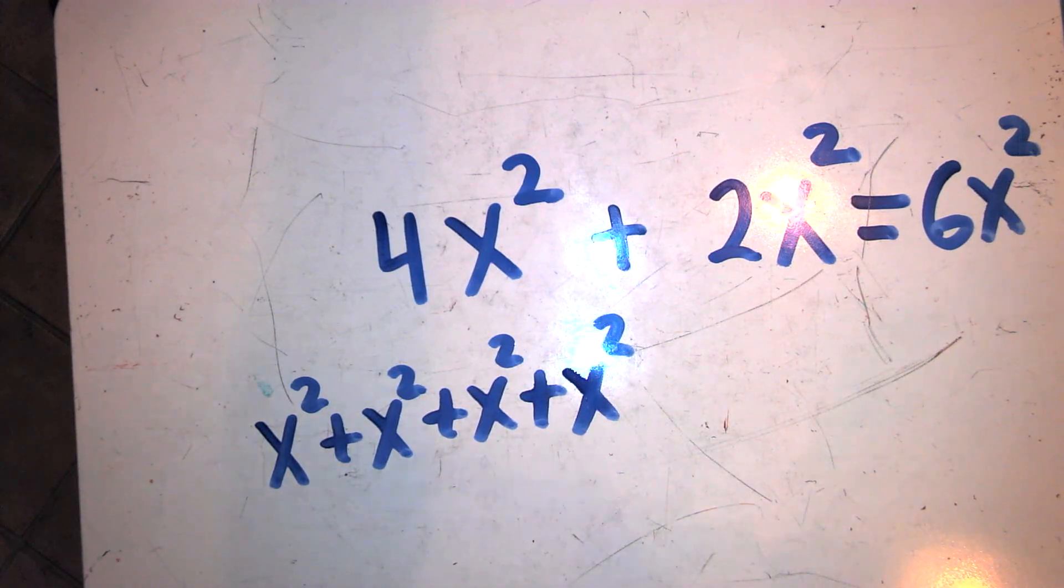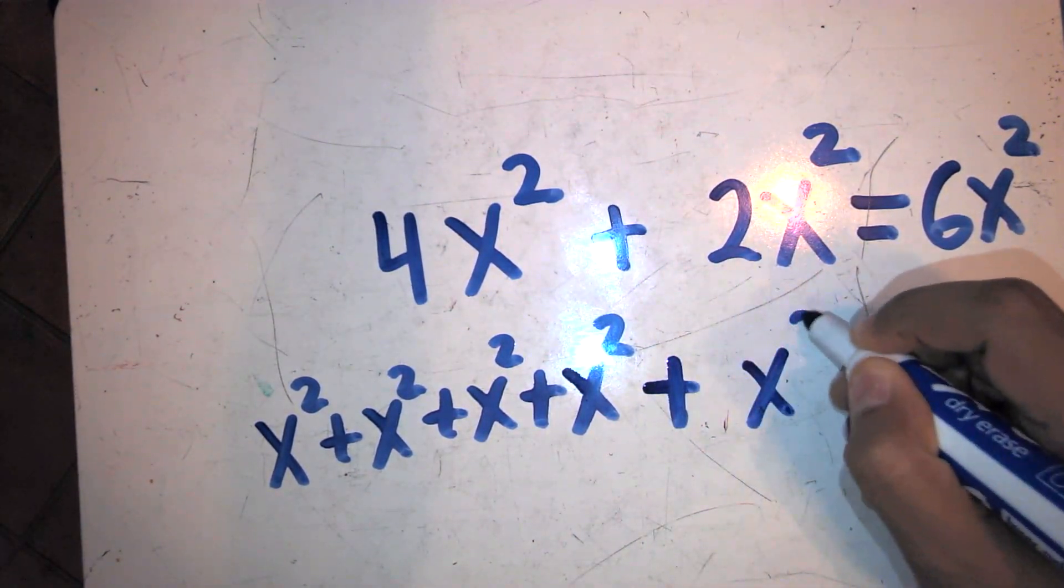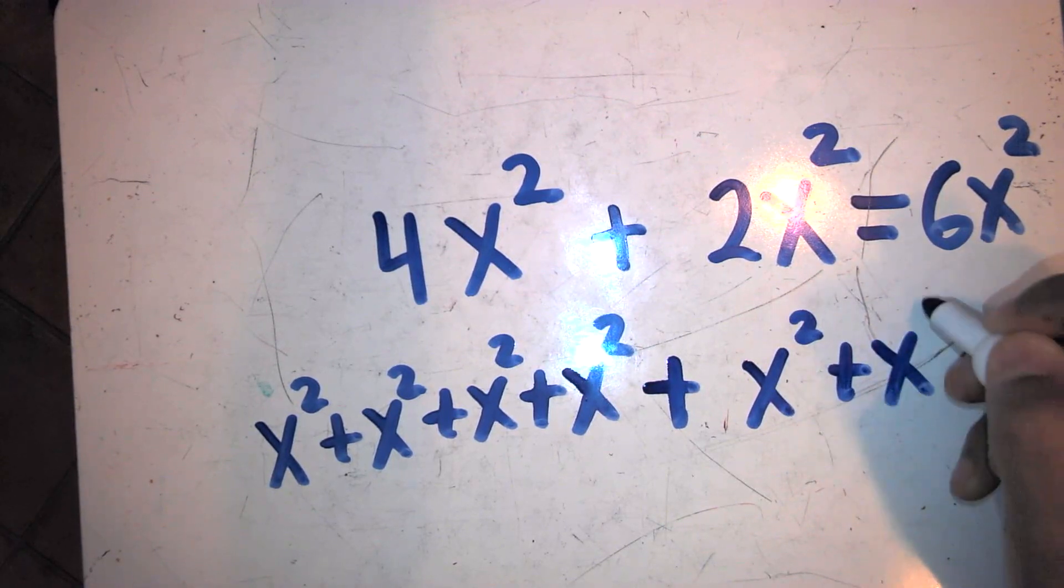Four groups of x squared being added to itself four times. Plus, I can write two x squared as two groups of x squares being added.